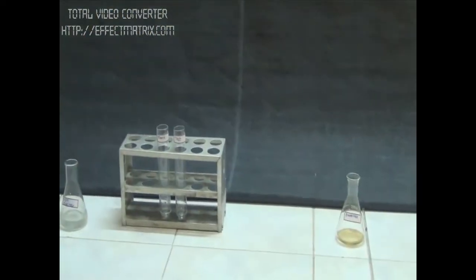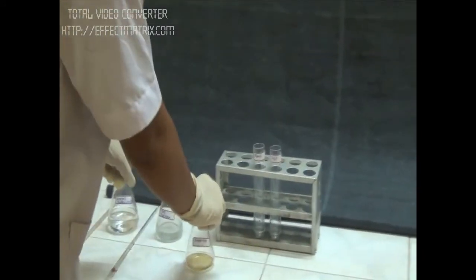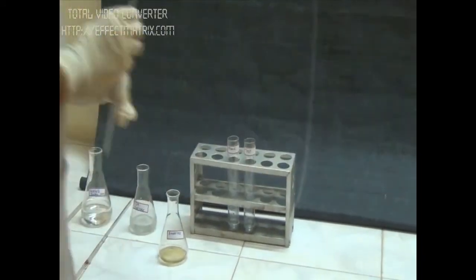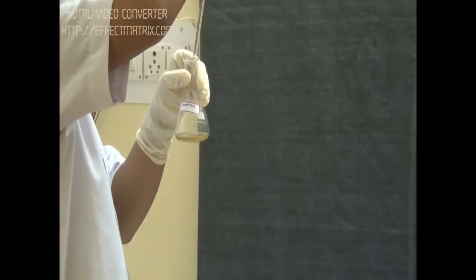We add 1 ml buffer to both tubes. We'll add 0.25 ml of enzyme invertase to the test tube only, as we want the reaction to proceed in the test tube only.